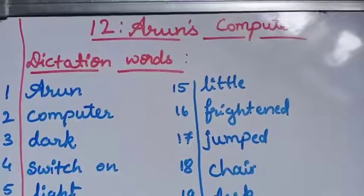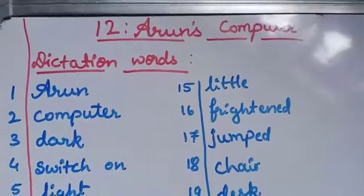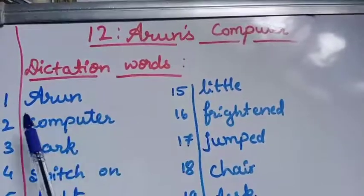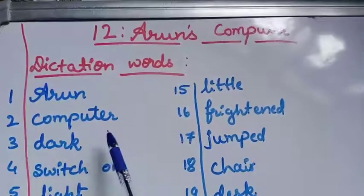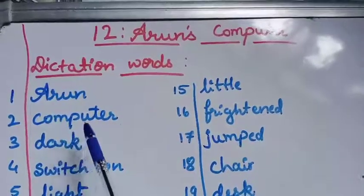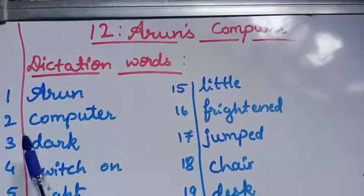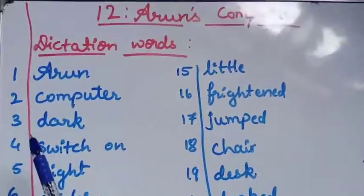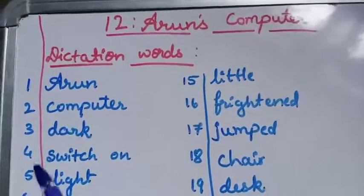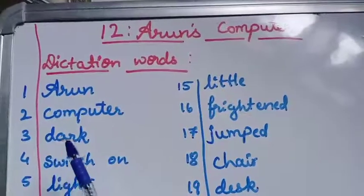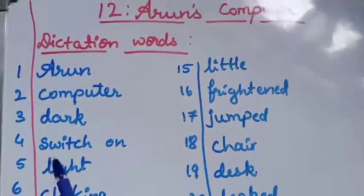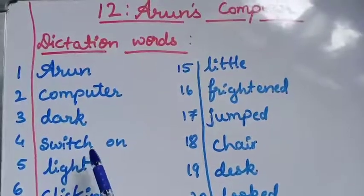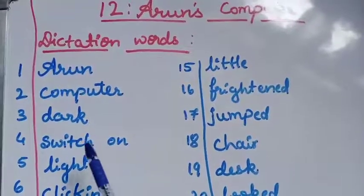These are the dictation words children. The first one is Arun. A-R-U-N Arun. A-R-U-N Arun. Next one, Computer. C-O-M-P-U-T-E-R Computer. C-O-M-P-U-T-E-R Computer. The third one is Dark. D-A-R-K Dark. D-A-R-K Dark. The fourth one is Switch-On. S-W-I-T-C-H Switch-O-N On. Switch-On.